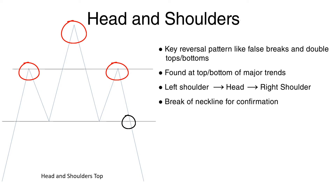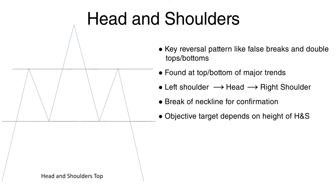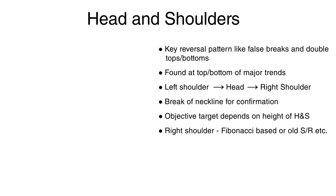If price breaks through this neckline, it confirms the completion of the head and shoulders reversal pattern. The objective measured move target once the neckline is broken is equivalent to the distance from the top of the head to the neckline. If you're trying to anticipate the formation of the right shoulder, an ideal location would be around the left shoulder area or near a key short-term resistance, which could be a horizontal level or a Fibonacci level such as the 38.2%, 61.8%, or 78.6% retracement.